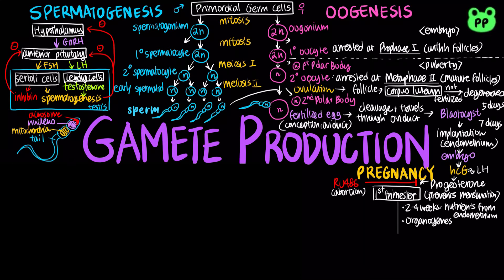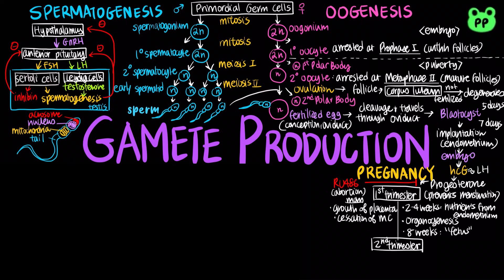All the major structures are present by eight weeks and the embryo is called a fetus. Several changes occur in the mother as well, including the growth of the placenta, cessation of ovulation and the menstrual cycle, breast enlargement, and nausea.